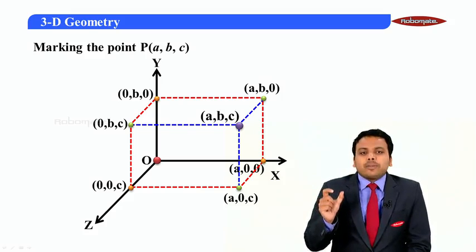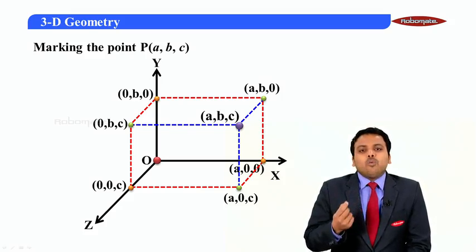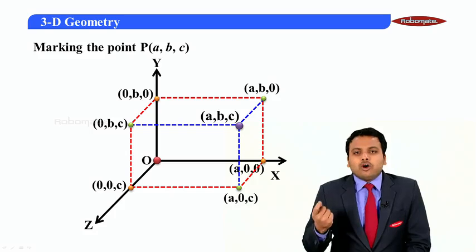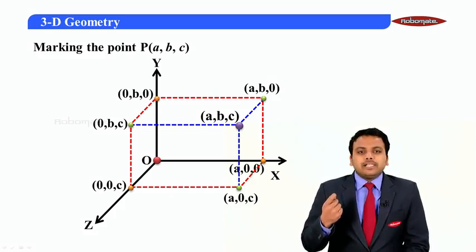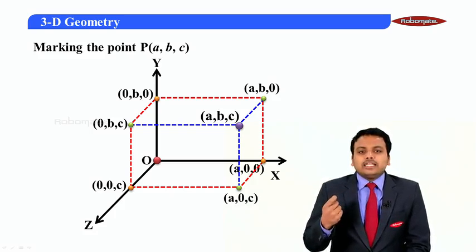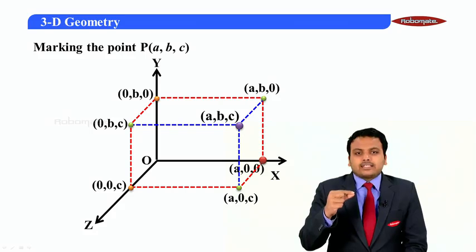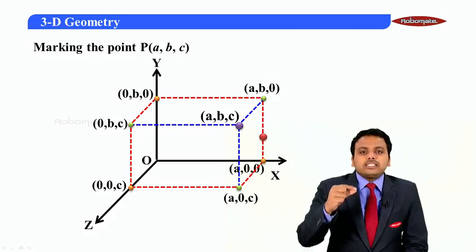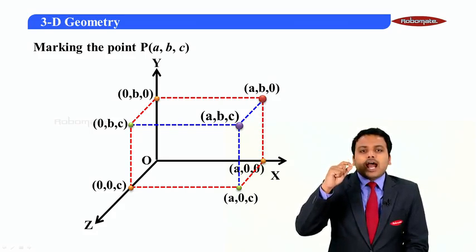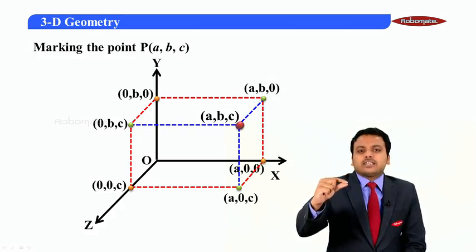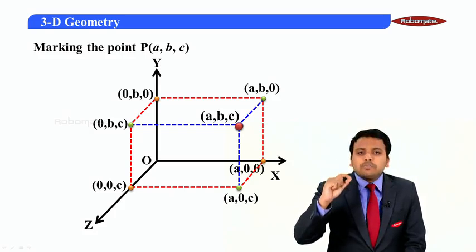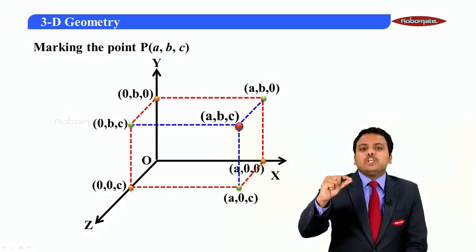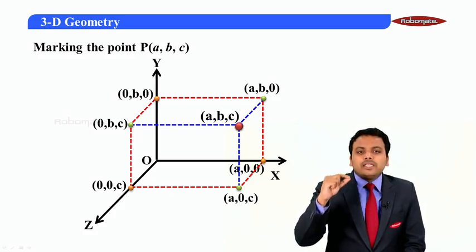So, we take the appropriate dimensions on the x-axis, y-axis, and z-axis to construct a cuboid. One corner of the cuboid is the origin; the opposite corner is our point (a, b, c). Alternatively, we can move a units along the x-axis, then b units parallel to the y-axis, then c units parallel to the z-axis to reach the point (a, b, c).